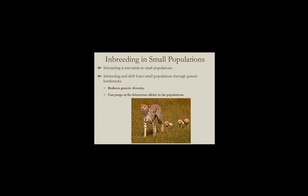Cheetahs went through a genetic bottleneck quite a while ago, and some of the deleterious traits expressed include very low sperm motility and issues with production of functional sperm, reducing fertility. The Florida panther — basically an isolated population of mountain lions — has also experienced inbreeding and genetic drift due to its small population. Males in Florida panthers oftentimes have just a single testicle, which is clearly not adaptive — it's the expression of a deleterious recessive allele.